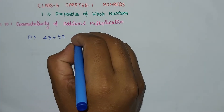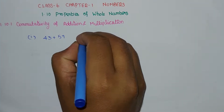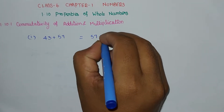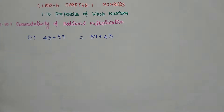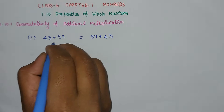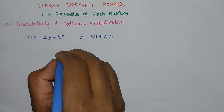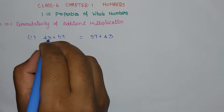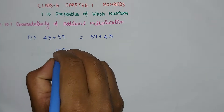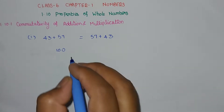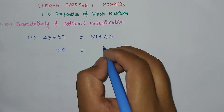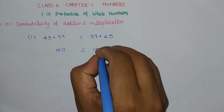43 plus 57 equals 57 plus 43. Adding 43 plus 57: 3 plus 7 is 10, carry 1; 4 plus 5 is 9, plus 1 is 10. So 43 plus 57 equals 100. Similarly 57 plus 43 also equals 100.